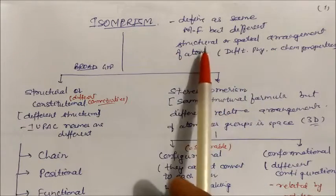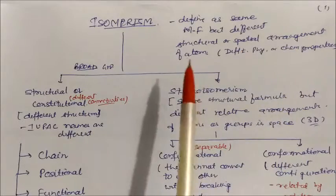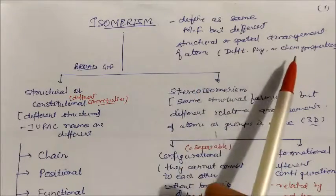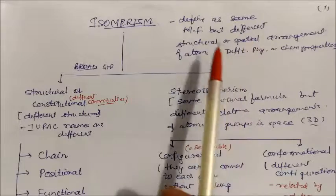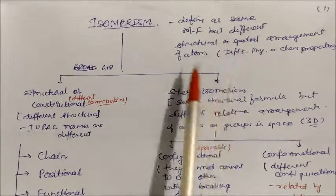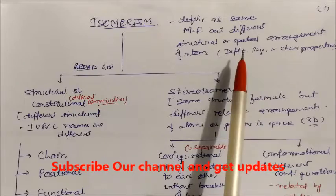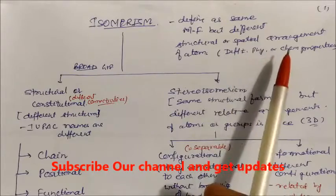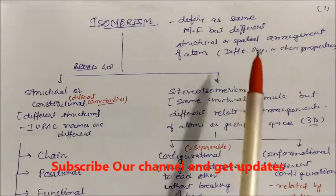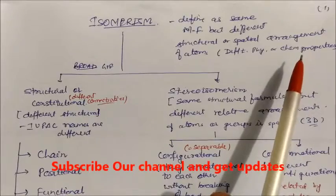There are two aspects: one is the structural arrangement and second is the spatial arrangement. These compounds have different physical and chemical properties. Physical properties will be different, and chemical properties will differ in a gradation order — just a decreasing or increasing order.